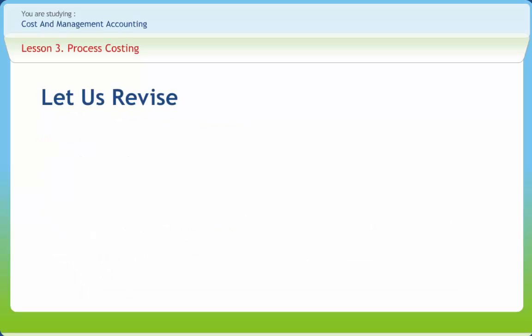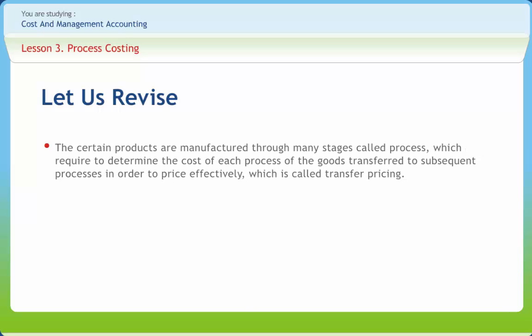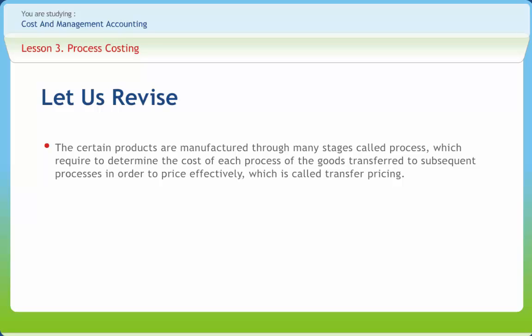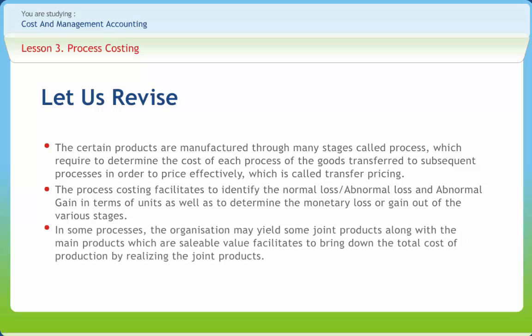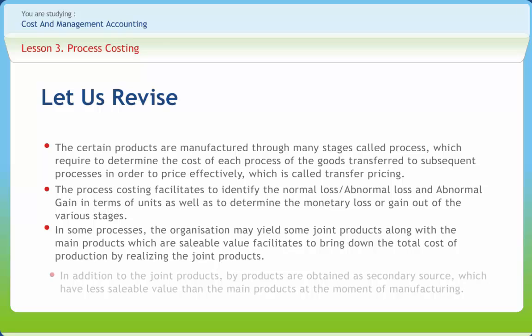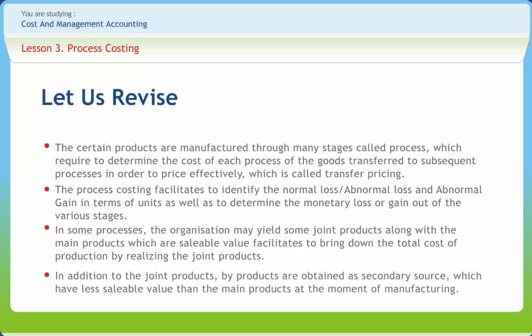Certain products are manufactured through many stages called processes, which require determining the cost of each process for goods transferred to subsequent processes in order to price effectively — this is called transfer pricing. Process costing facilitates identifying normal loss, abnormal loss, and abnormal gain in units, as well as determining monetary loss or gain across various stages. In some processes, the organization may yield joint products along with main products, which have saleable value and help bring down total production cost. In addition, by-products are obtained as a secondary source with less saleable value than the main products.